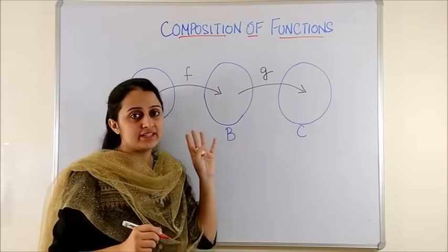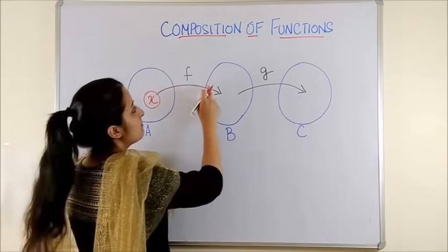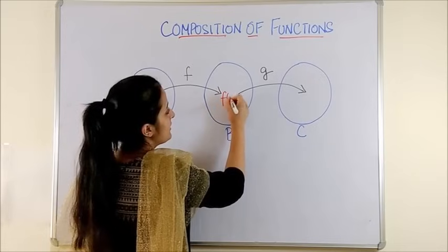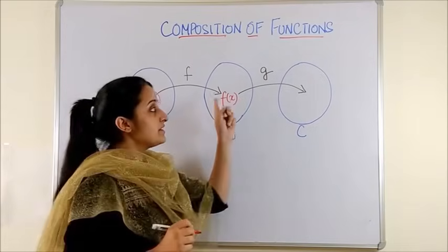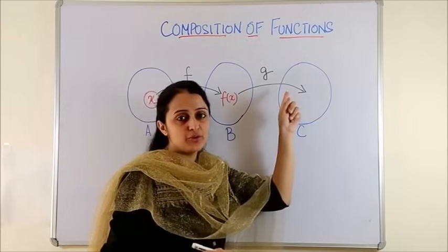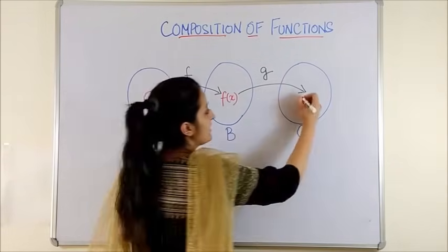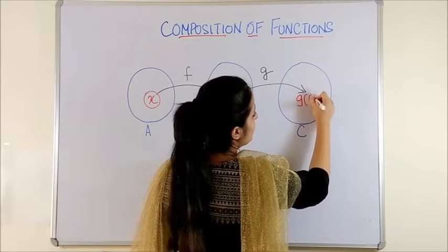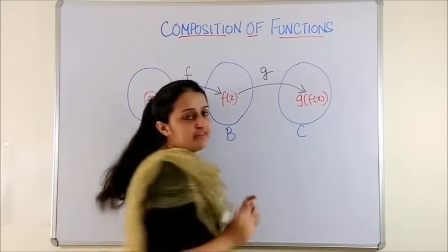I take a random element here, let's say X. After applying the function F, it becomes F of X. Now beginning with F of X, this acts as the element to my new function G and gives us the final product as G of Fx.